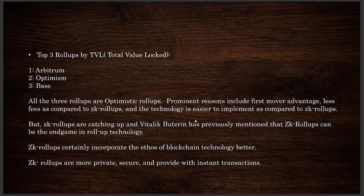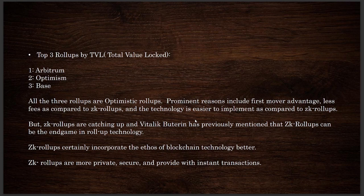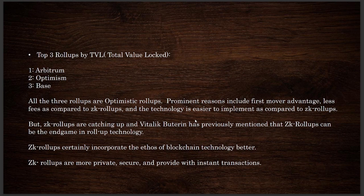The top three rollups by total value locked are Arbitrum, Optimism, and Base. Prominent reasons for increased adoption of optimistic rollups include first-mover advantage, lower fees compared to ZK rollups, and easier implementation. However, ZK rollups are catching up. The founder of Ethereum, Vitalik Buterin, has previously mentioned that ZK rollups can be the endgame in rollup technology. ZK rollups certainly incorporate the ethos of blockchain technology — increased privacy, a better way of providing validity proofs — and thus are more private, secure, and provide instant transactions.